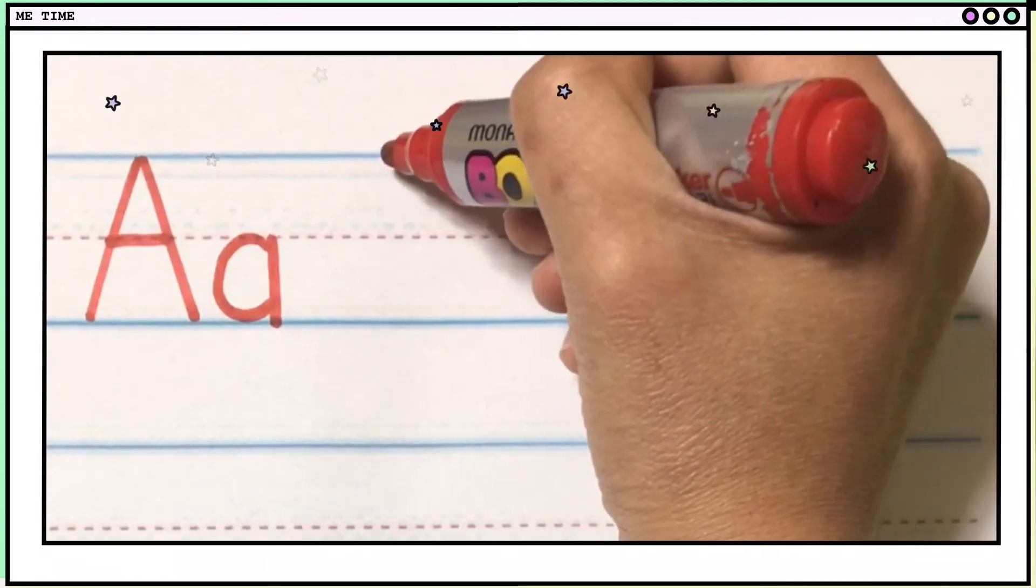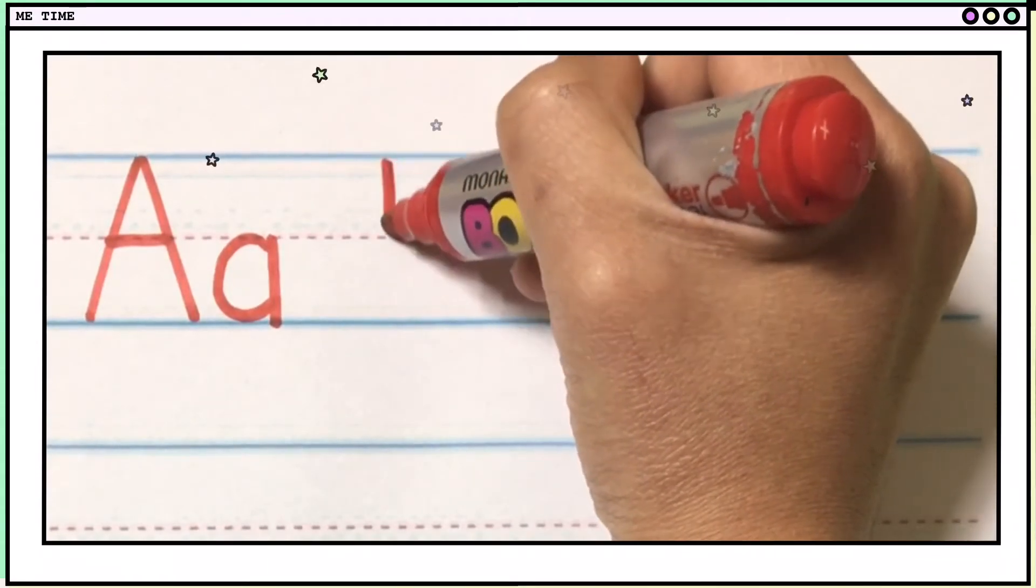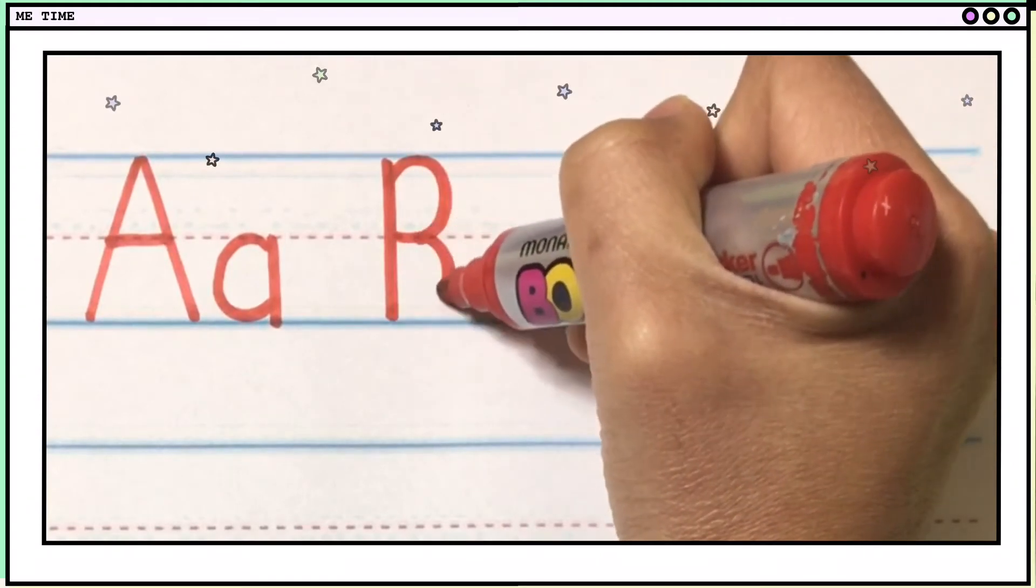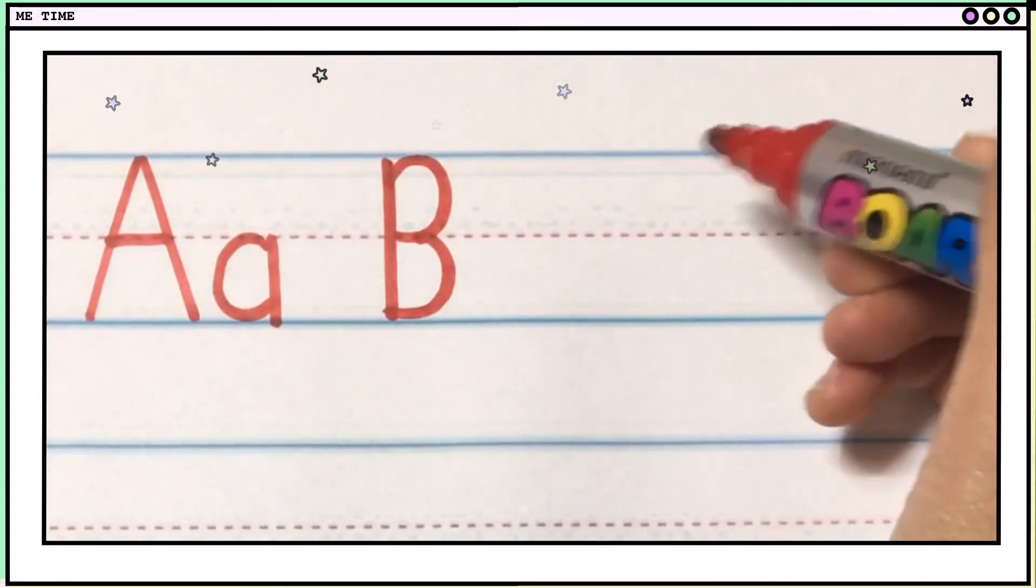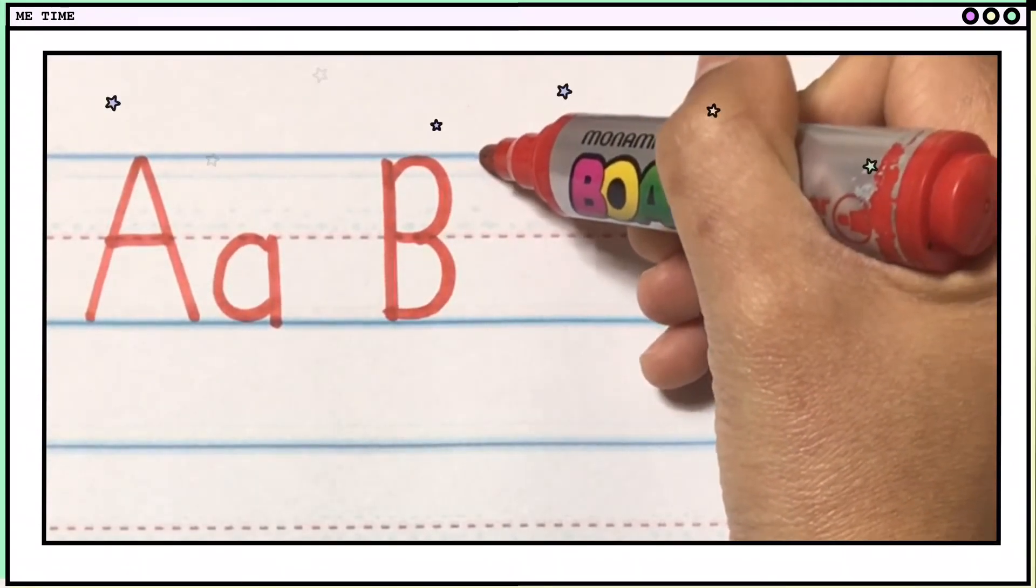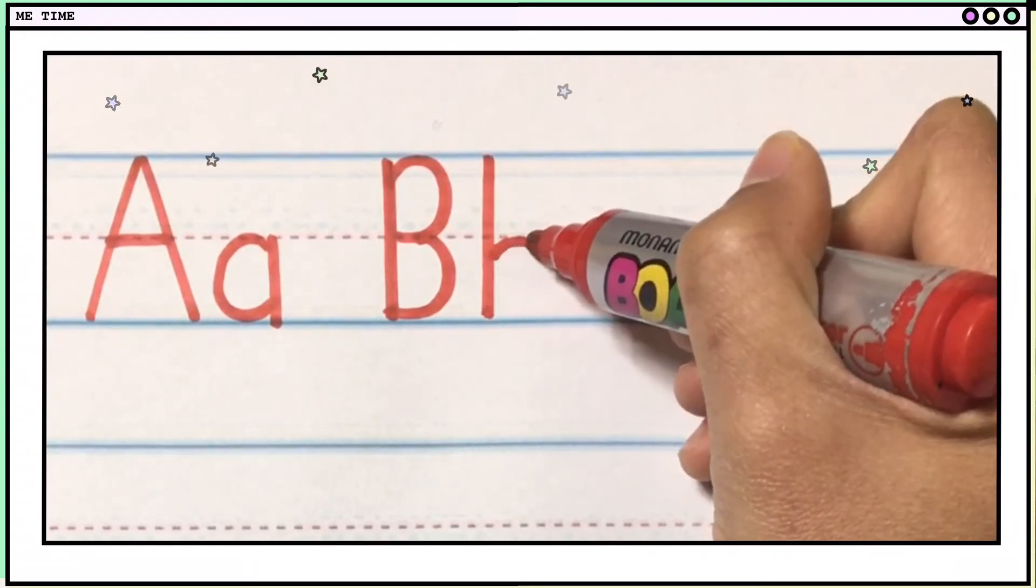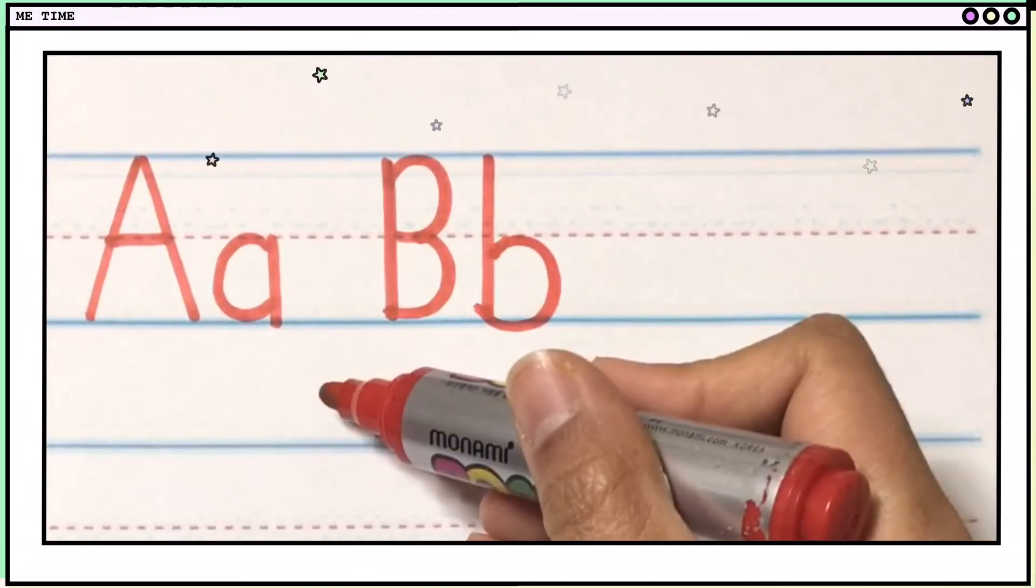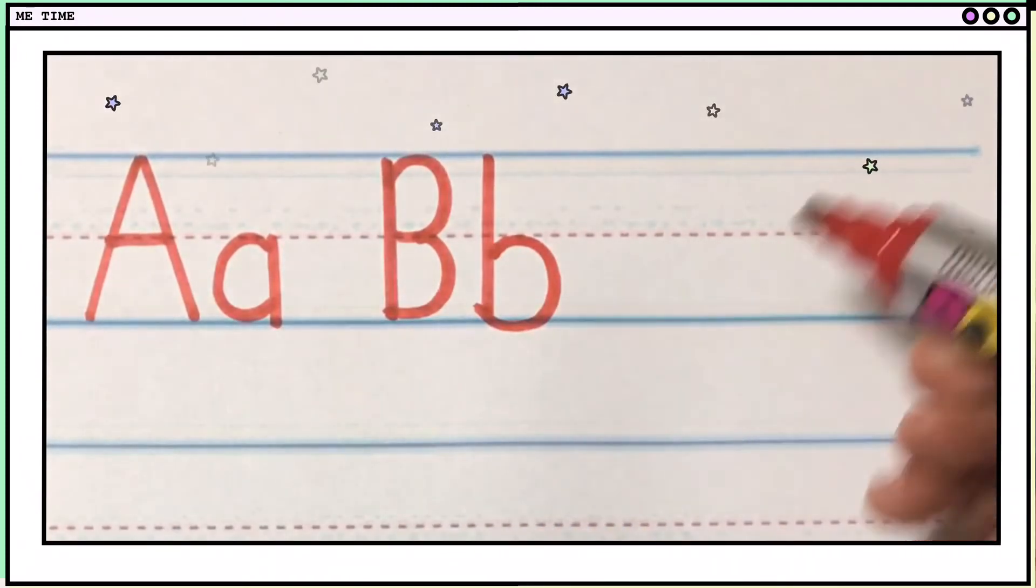Next is B. One, two, three. That is big B and small C. One line. And like this. Big A, small A. Big B, small B.